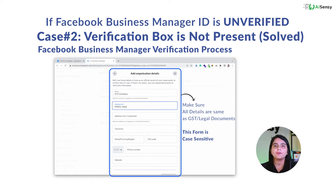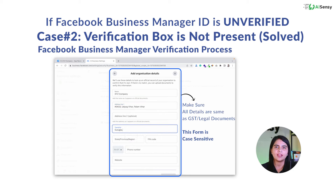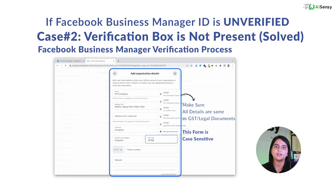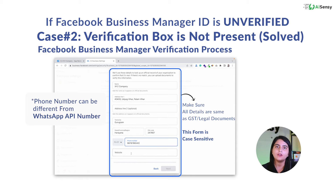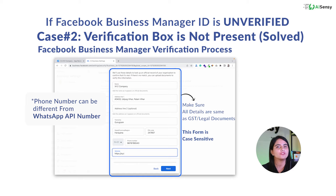In the Address field, copy and paste the exact address from the legal document. Make sure to fill all fields: address line 1, address line 2, town or city, state, and pin code. For the mobile number, you can use any working phone number — it can be your WhatsApp Business API number or not, but it should be a working number. In the Website's URL field, copy and paste your website's URL and then click on Next.